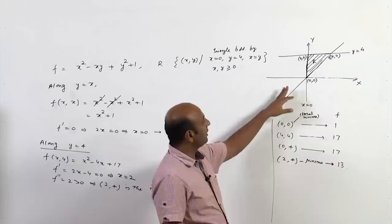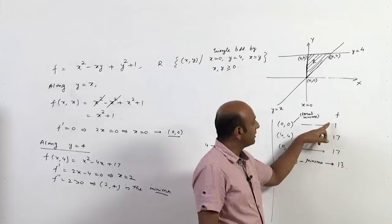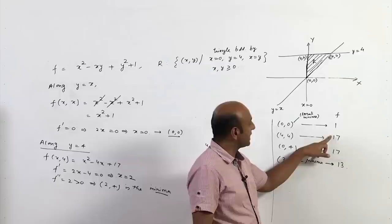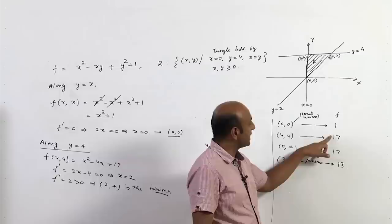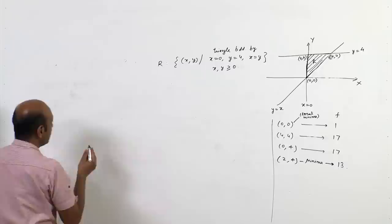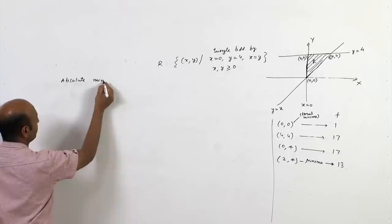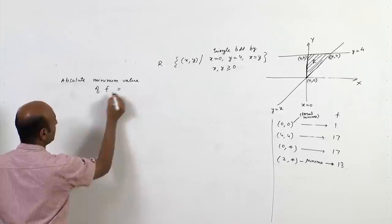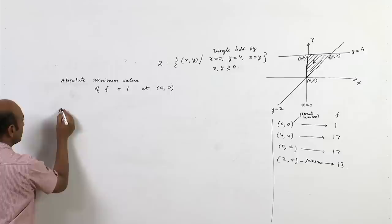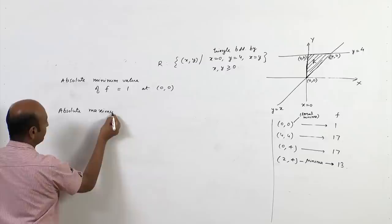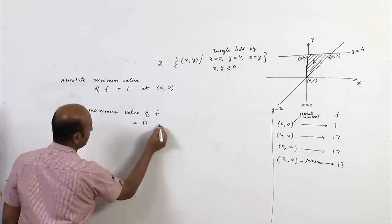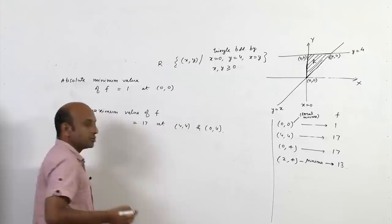We have now listed all possible points. From all these values, the absolute minimum of f is 1 at (0,0), and the absolute maximum is 17 at both (4,4) and (0,4). So the absolute minimum value of f is 1 at (0,0), and the absolute maximum value is 17 at (4,4) and (0,4).